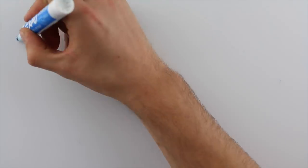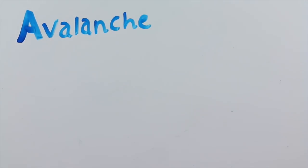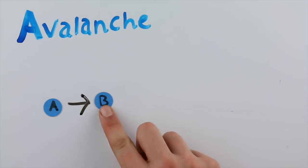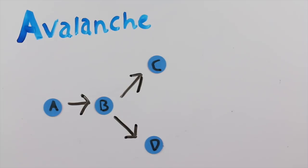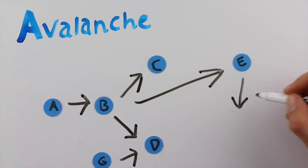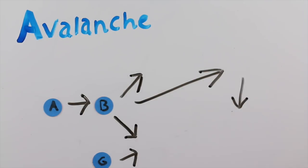This all leads up to part 4, Avalanche, where everything ties together and becomes permanent. The confirmed transactions are appended to a data structure, in this case an append-only directed acyclic graph. And those are the basics on how consensus works within Avalanche.